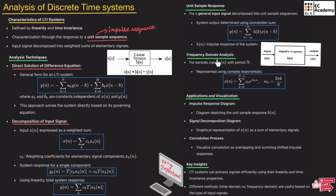Next, we will understand the frequency domain analysis. For a periodic input sequence X(N) with period N, it can be represented in the form of complex exponentials as: X(N) = summation of K from 0 to N-1 of C_K · e^(j·omega_K·N), where omega_K = 2·pi·K / N, and N represents the number of samples.